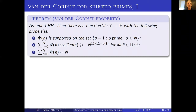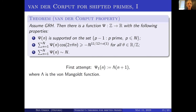That's the van der Corput property. As I remarked, that implies a good bound for the Sárközy-type property for shifted primes — the intersectivity property — and I just sketched a model argument for how that implication goes.